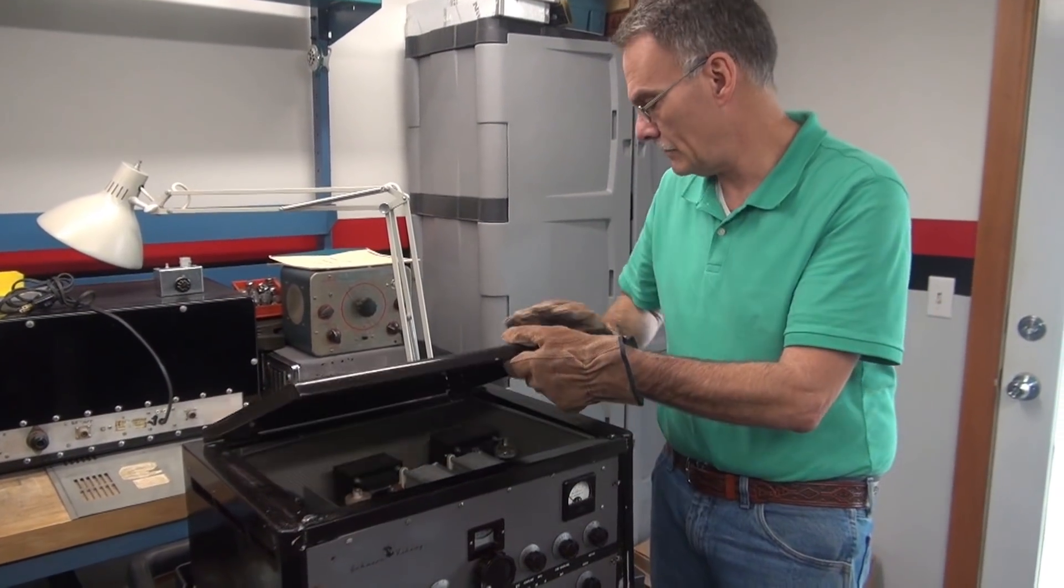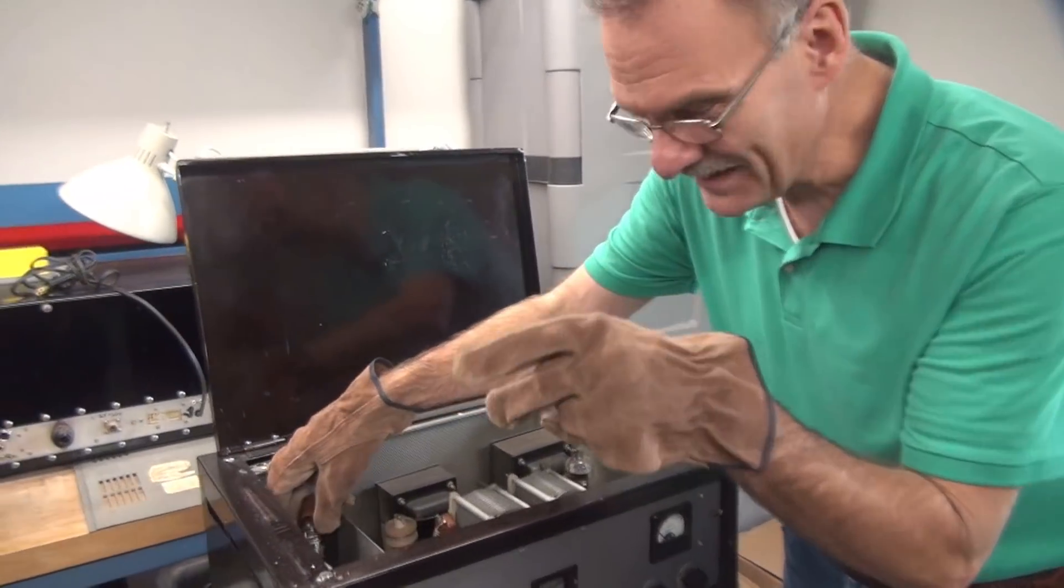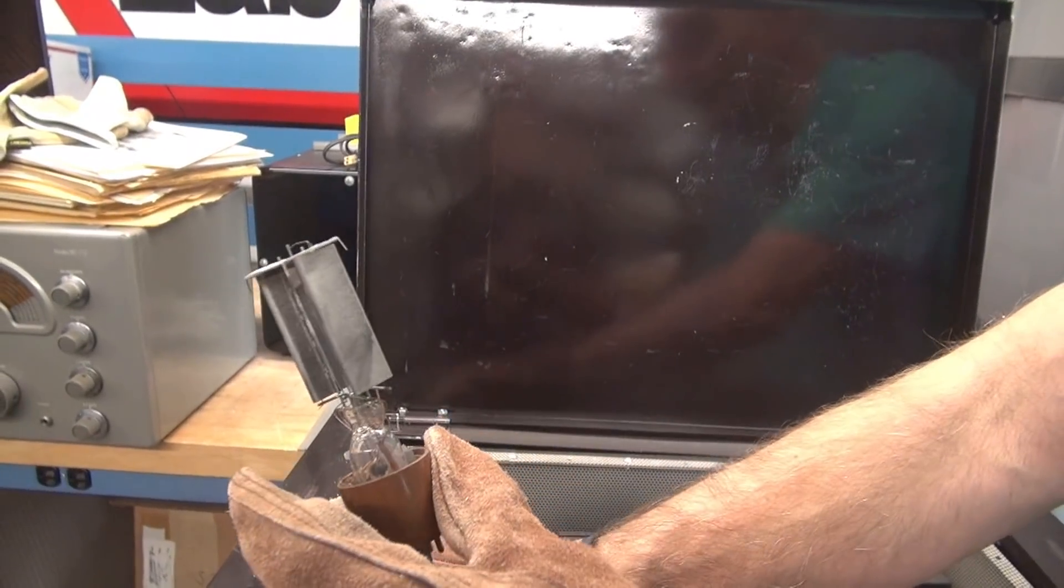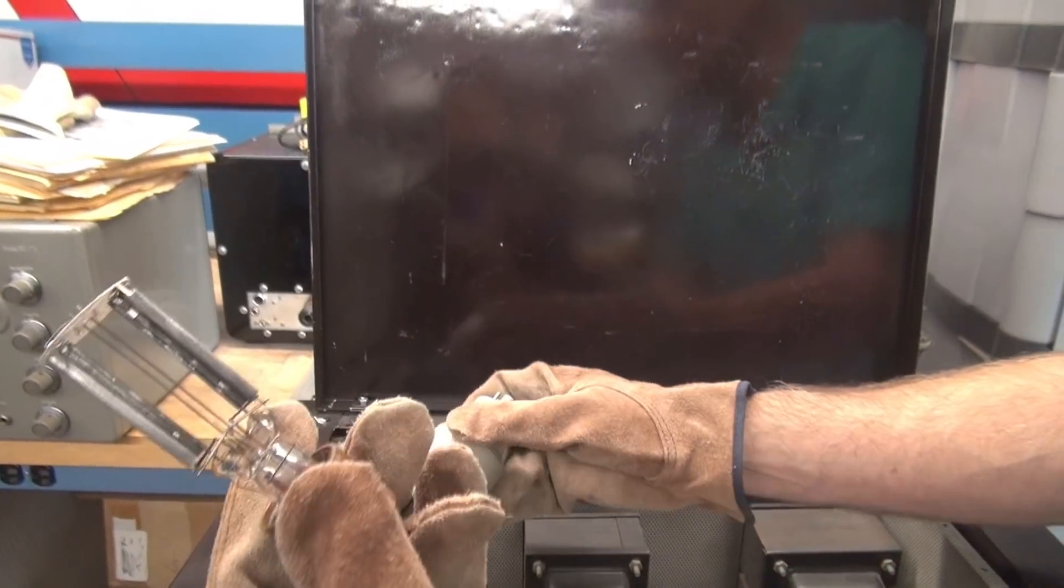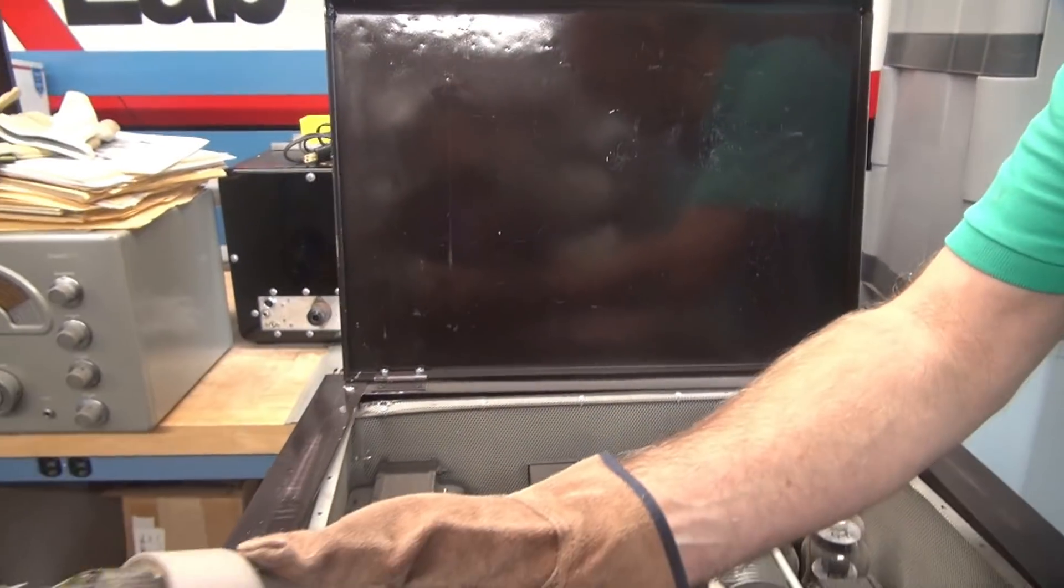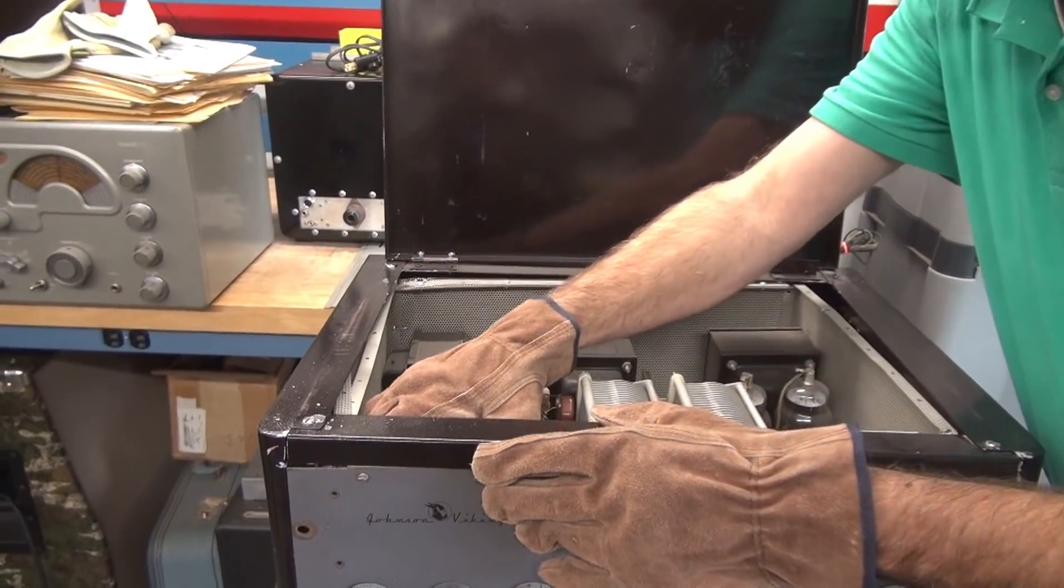All right, so what I'm going to do first off, got gloves on so I can't get cut. Get the smashed tubes out of here. This one looks like the 5V4. That's a 5R4.